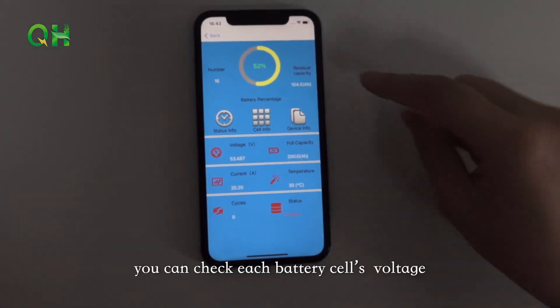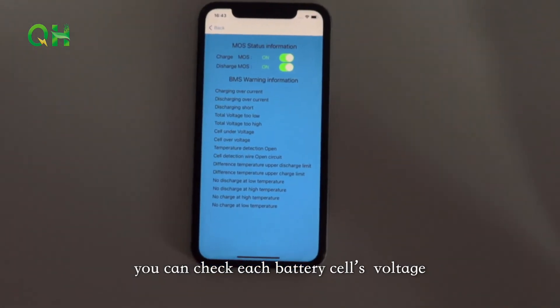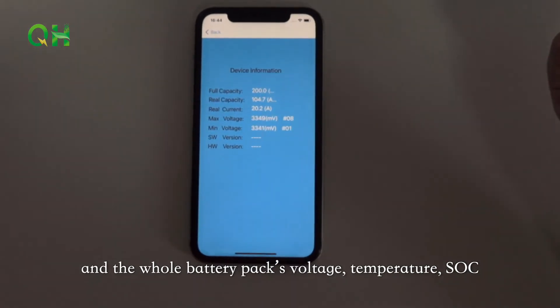Through the Bluetooth, you can check each battery cell's voltage and the whole battery pack's voltage, temperature, SoC, and more information on the app.